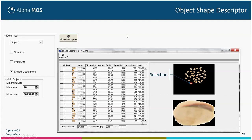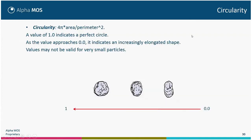This is very powerful to analyze the color and shape of every single object. Circularity indicates the shape of the object: a value of one indicates a perfect circle, and a value of zero indicates a very elongated shape. You can see that depending on the shape of the object, you will have a circularity close to one or close to zero. Note that the value may not be valid for very small particles where the number of pixels is very low.